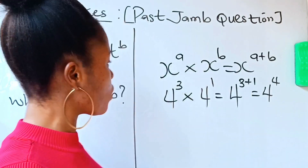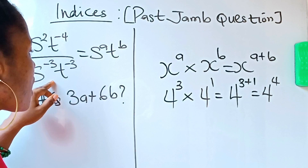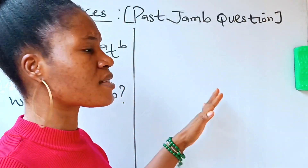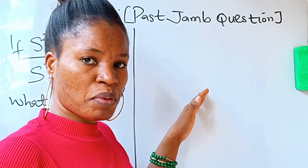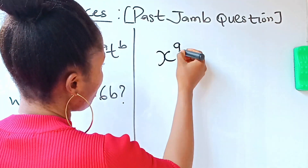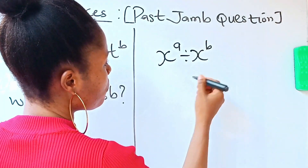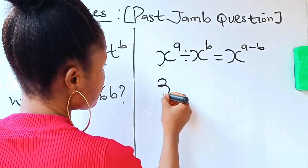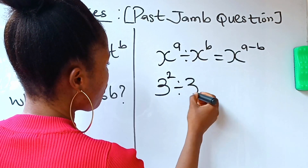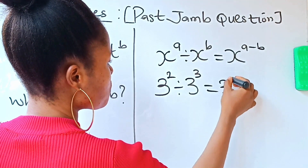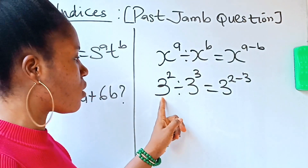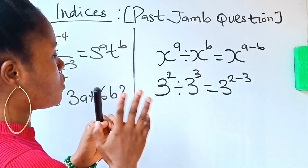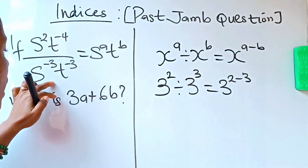Now the division law, which is the opposite of the multiplication law. It states that x raised to the power of a divided by x raised to the power of b equals x raised to the power of a minus b. For example, 3 raised to the power of 2 divided by 3 raised to the power of 3 gives 3 raised to the power of 2 minus 3. You pick one base and subtract the powers. These two laws are what we will apply.